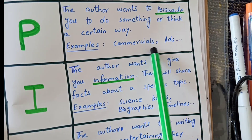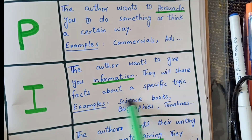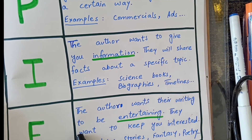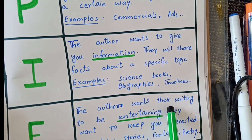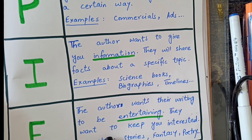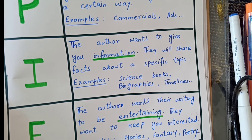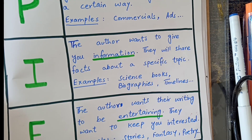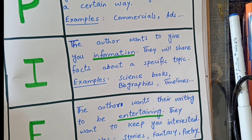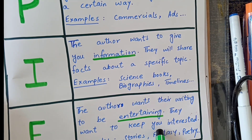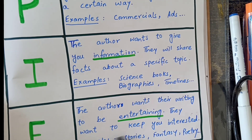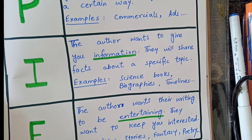To summarize so far: P is to persuade the reader, I is to inform the reader. The third is E, which stands for entertaining. The author wants their writing to be entertaining — they want to keep the reader interested, not necessarily give specific information or persuade. Examples include stories, fantasy, and poetry.